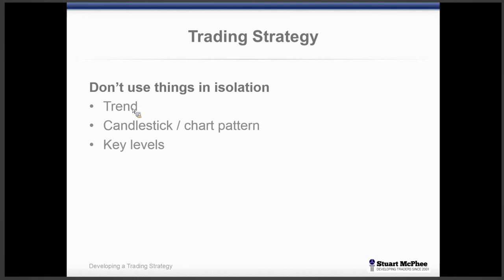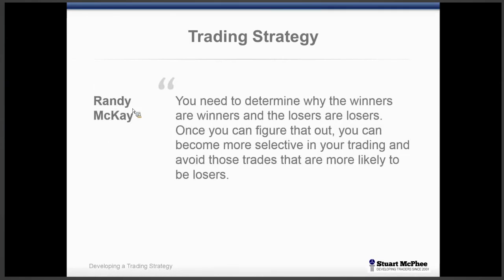I'll just finish off with a few quotes. This is from one of the Market Wizards: you need to determine why the winners are winners and the losers are losers. Once you can figure that out you can become more selective in your trading. Only demand the highest quality signals — not perfect, because they rarely exist, but the highest quality. Don't trade everything that pops up. Just because my Metastock scan showed 50 stocks, there's no way I'm going to trade all of those — I just want the highest quality signals and to avoid those trades more likely to be losing ones.